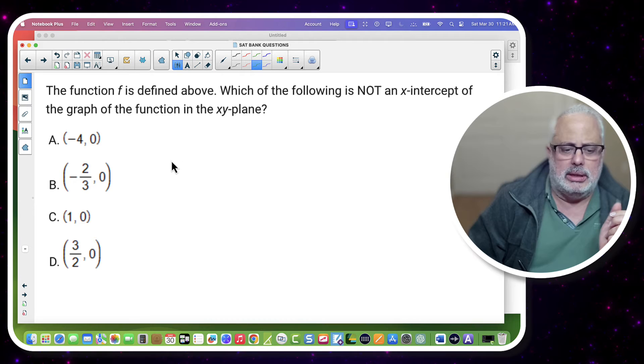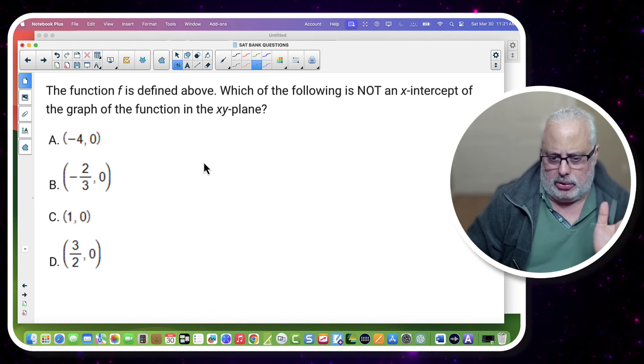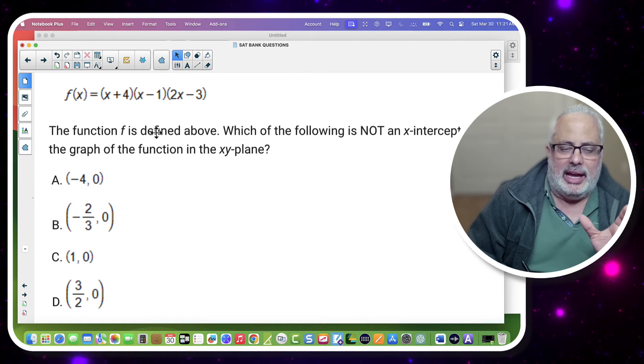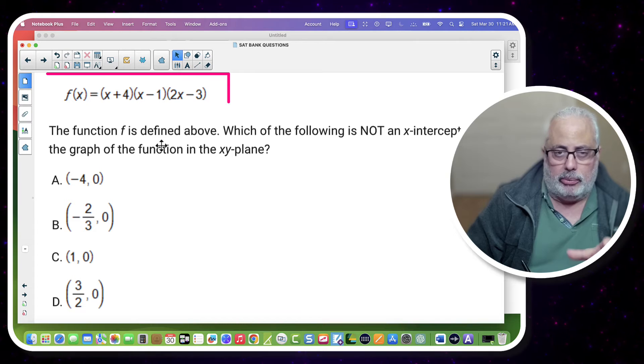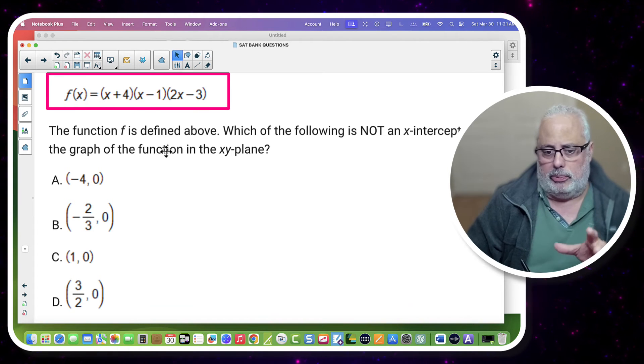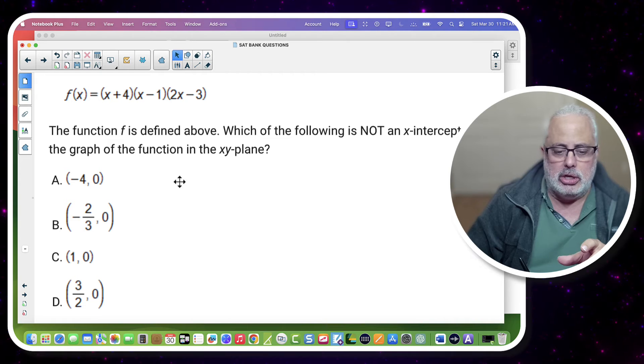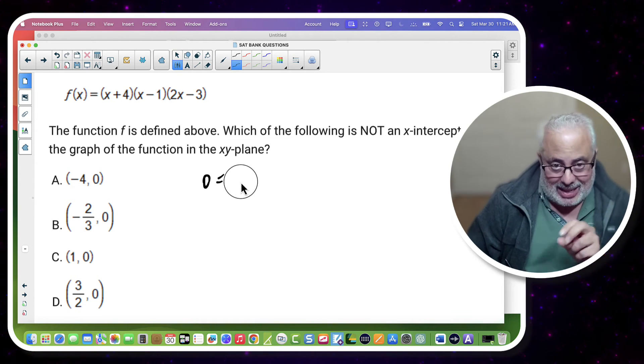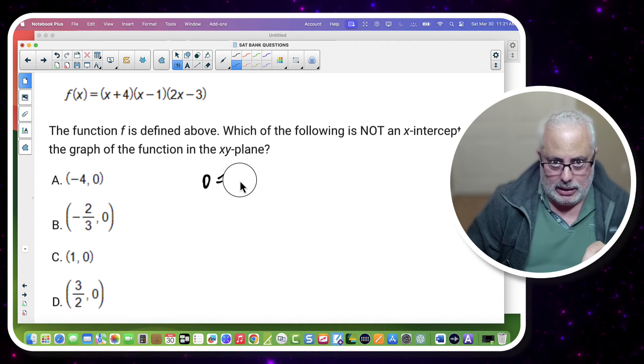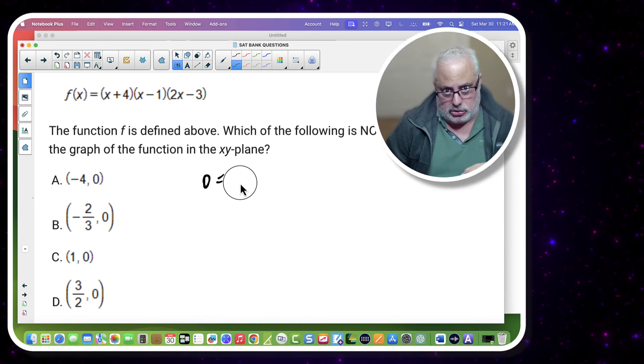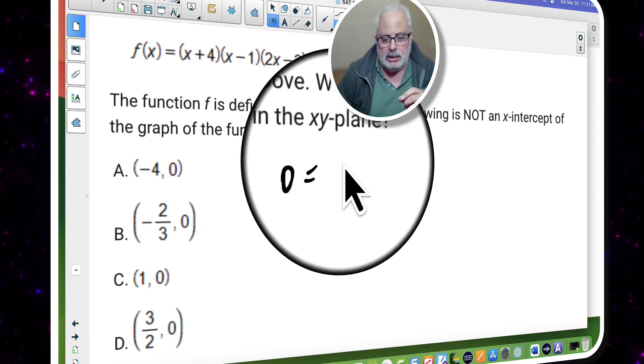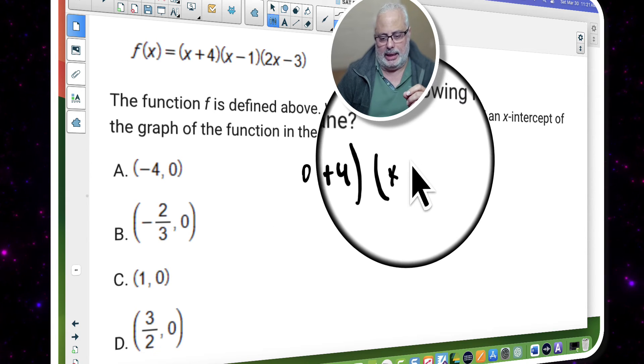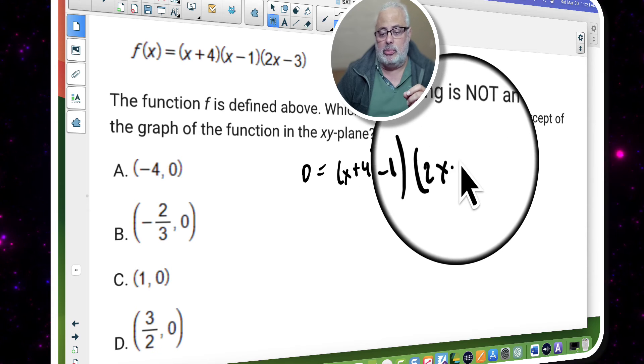So I'm going to replace the function by zero. Remember what was the function? The function was f of x equal x plus four parenthesis times x minus one parenthesis times two x minus three parenthesis. So I'm going to replace the y by zero because that's the notation of the y. And I know that the format of the x-intercept, the y is zero. And I have x plus four, and I have x minus one, and I have two x minus three.